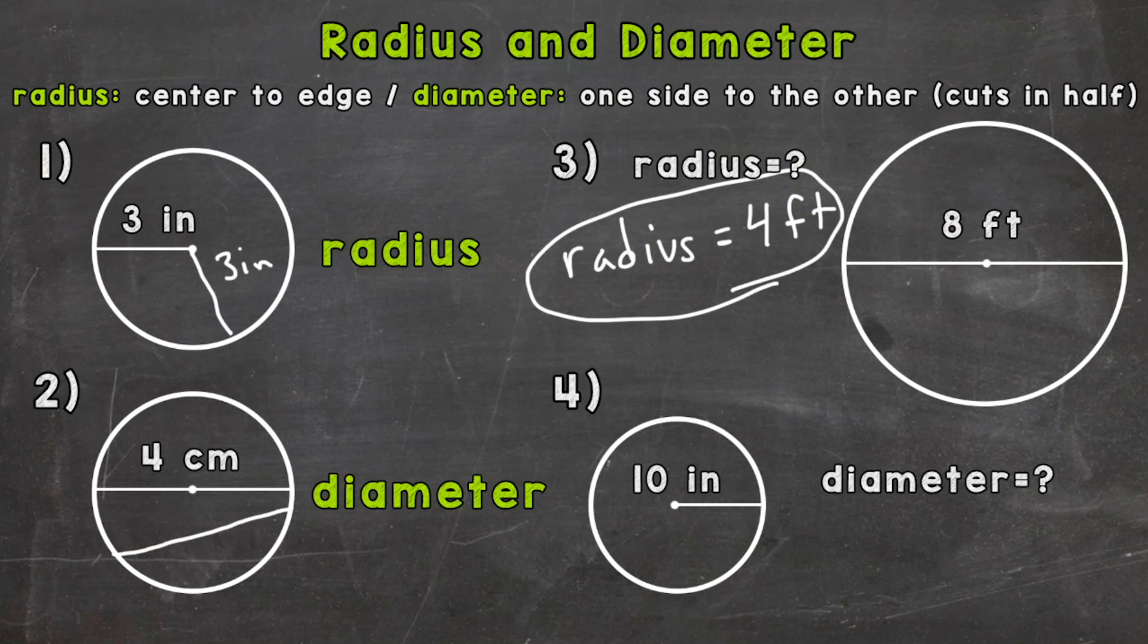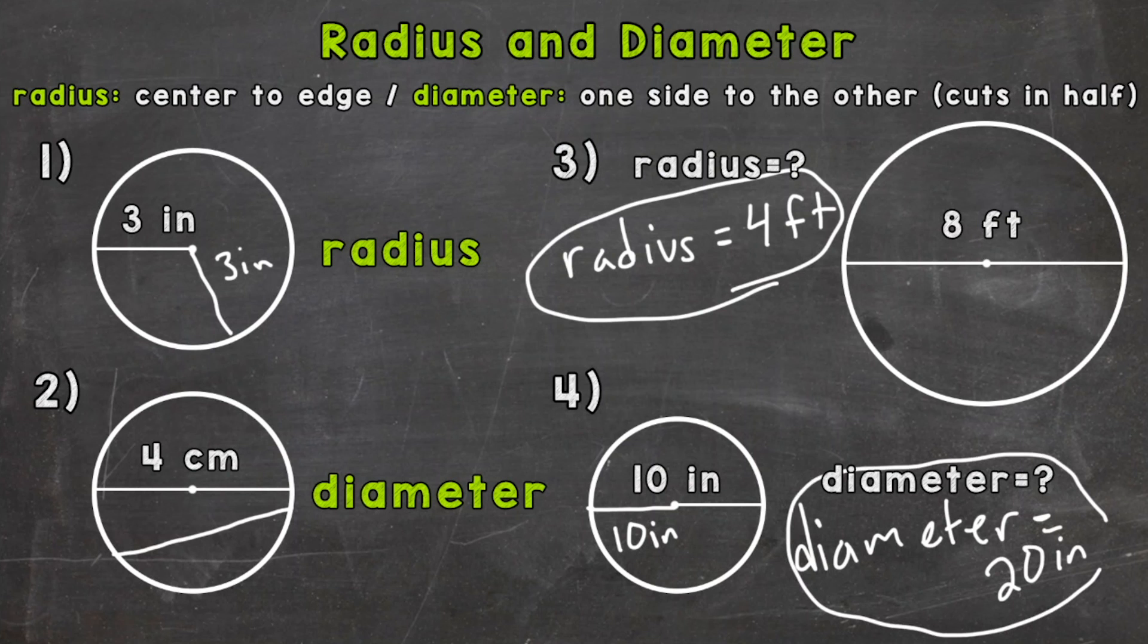For number four, we're going to do the opposite. We're given the radius of 10 inches and we need the diameter. So we do the opposite—we need to multiply that radius by 2, because we have 10 inches plus another 10 inches here to give us a total of 20 inches. If we're given a radius, we just need to double that and we have the diameter.